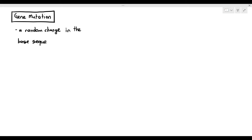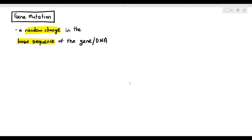In the exam, if you want to use the phrase 'random change in base sequence of the gene,' that's accepted, or 'random change in the base sequence of the DNA' — that is also accepted. The keyword here is 'random change,' which means mutations are unpredictable. We cannot say for sure when a mutation is going to happen. There are certain risk factors that will increase the chances of mutations, but there is an unpredictability when it comes to mutation.